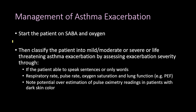If the patient presents with these features, you start them immediately on short-acting beta agonist and oxygen, then classify the patient into mild, moderate, severe, or life-threatening asthma exacerbation by assessing exacerbation severity — whether the patient can speak in sentences or only words, respiratory rate, pulse rate, oxygen saturation, and lung function such as peak expiratory flow rate. Note the potential for overestimation of pulse oximetry readings in patients with dark skin color.